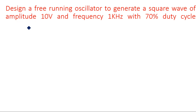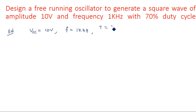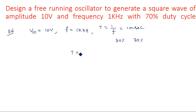Amplitude is nothing but Vcc, so Vcc is equal to 10 volts. Frequency is equal to 1 kilohertz. The time period T is equal to 1 by f, which is 1 millisecond. With a 70 percent duty cycle, the signal has 70 percent ON period and 30 percent OFF period within that 1 millisecond.